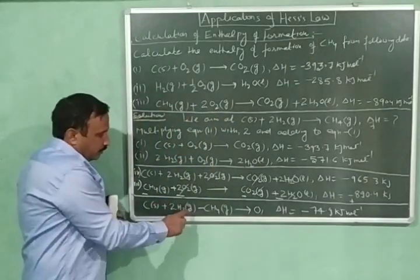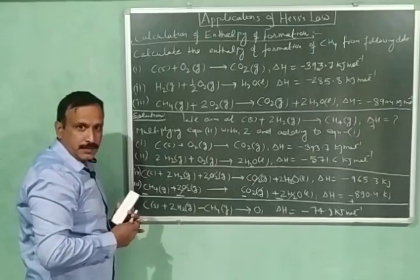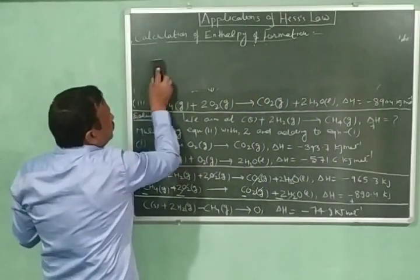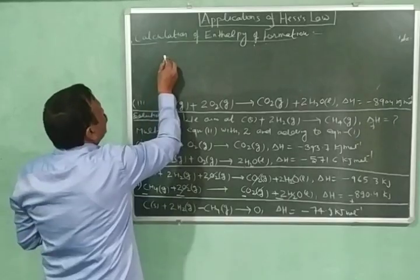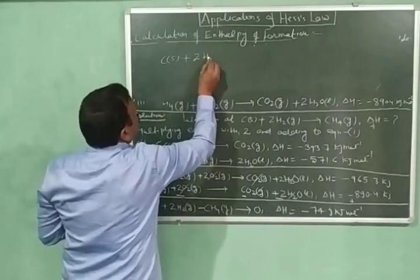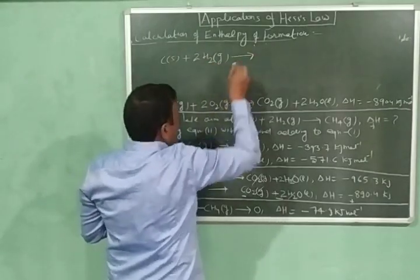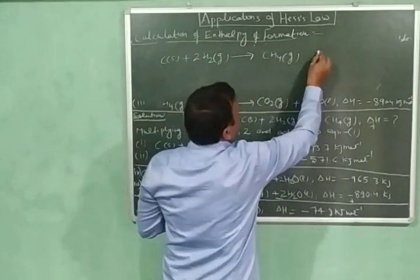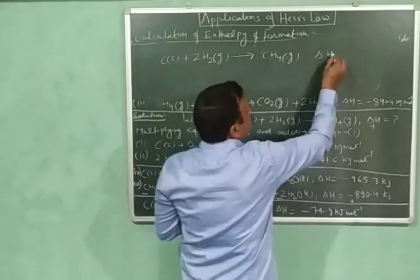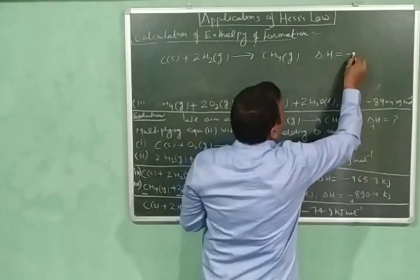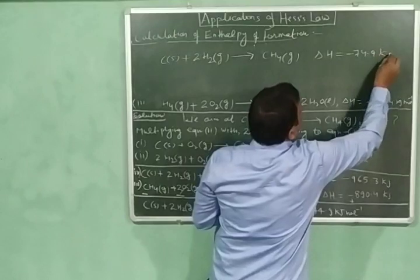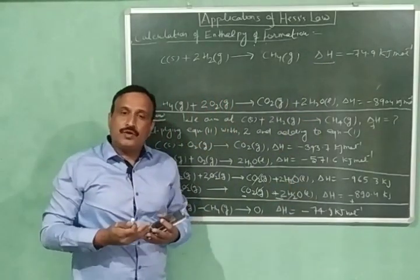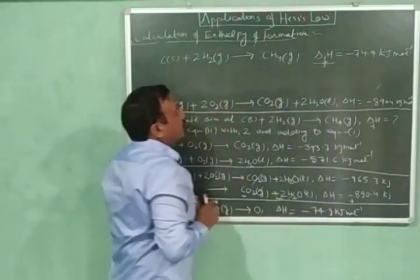Taking the one mole of methane to the right-hand side, the equation becomes: one mole of carbon (solid) plus two moles of hydrogen (gaseous) gives one mole of methane (gaseous), and the enthalpy change of this reaction is equal to minus 74.9 kilojoules per mole. This enthalpy change is the enthalpy of formation of methane.